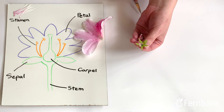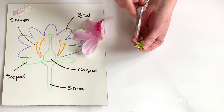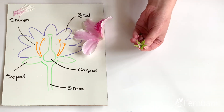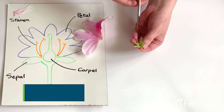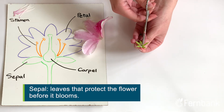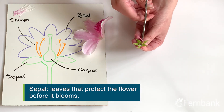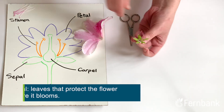In the meantime we're going to cut away these leaves. These are called the sepal leaves and they protect the flower before it blooms. So we're going to go ahead and remove those.